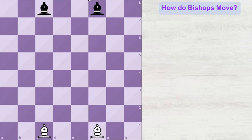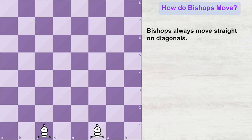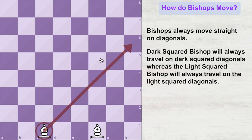Now let's understand how these bishops move in a game. A bishop always moves in diagonals. Since this bishop is sitting on a dark square, it will always move on the dark square diagonals. Similarly, this bishop is sitting on the light square and therefore it can move on all the light square diagonals.